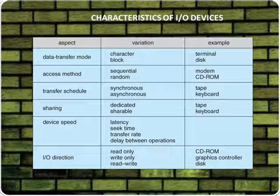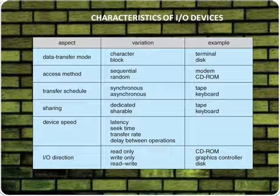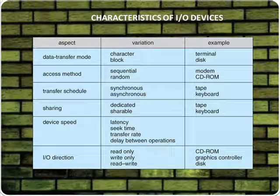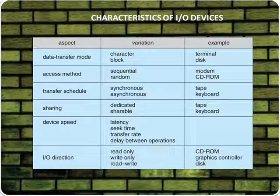Sharing: variations are dedicated and shareable — tape is an example of dedicated, keyboard is an example of shareable. Device speed: variations include latency, seek time, transfer rate, and delay between operations. Input and output direction: variations are read only, write only, and read-write — CD-ROM is an example of read only, graphics controller is an example of write only, and disk is an example of read-write.